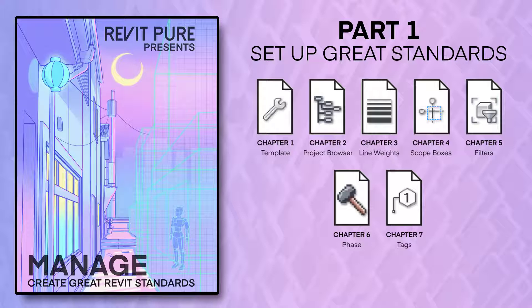Part 1 is about creating great Revit standards and setting up a strong template. You will learn how to organize your project browser, how to set up line weights, scope boxes, filters, phases, and how to create efficient tags.